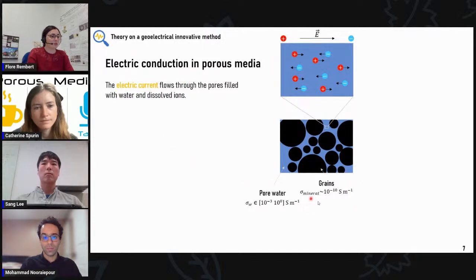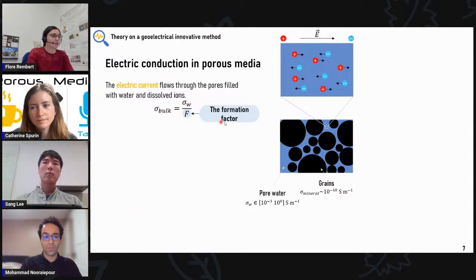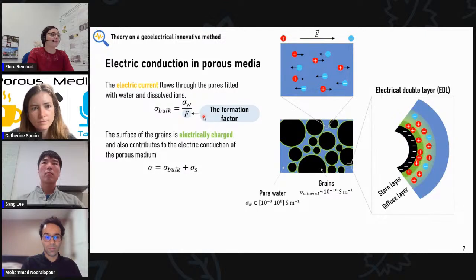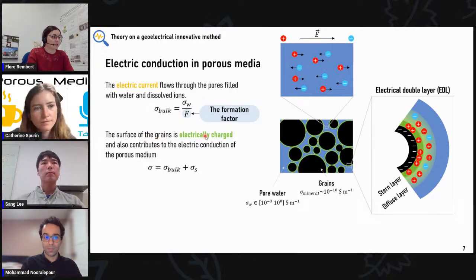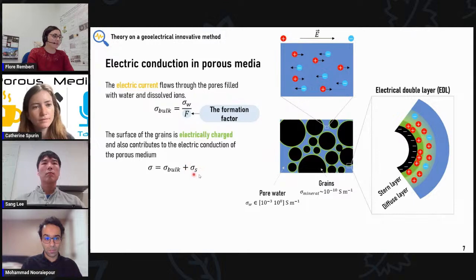In the porous medium, conduction is not ensured by the grains when we don't have metallic particles or semiconductors, but by electrolytic conduction with the electric current flowing through the pores saturated with water and dissolved ions. We relate the measured electrical conductivity to the pore water conductivity through the formation factor that highlights the structure of the porous medium. We also have surface conduction because the surface of the grains is electrically charged through what is called the electrical double layer, where counter ions are concentrated in this area, so we add a second term from the surface conduction.